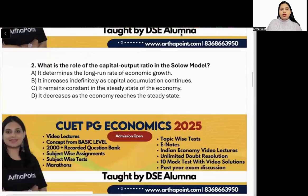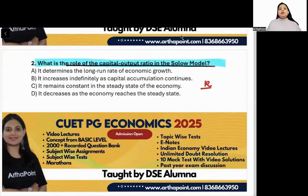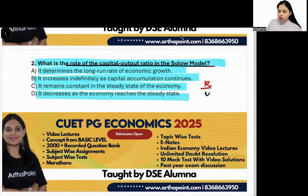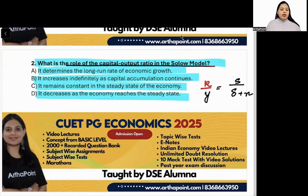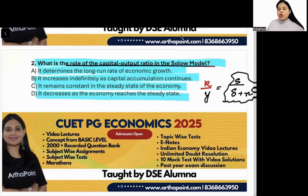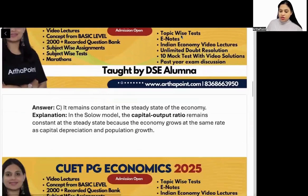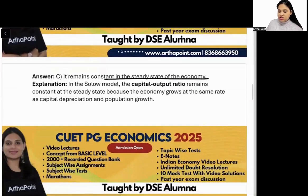Next question: what is the role of the capital-output ratio in the Solow growth model? Options: it determines the long-run rate of economic growth; it increases indefinitely; it remains constant; or it decreases. We have studied the capital-output ratio with a formula. Basically, the capital-output ratio is equal to a value A, and A is constant. This means the capital-output ratio remains constant in the steady state of the economy.